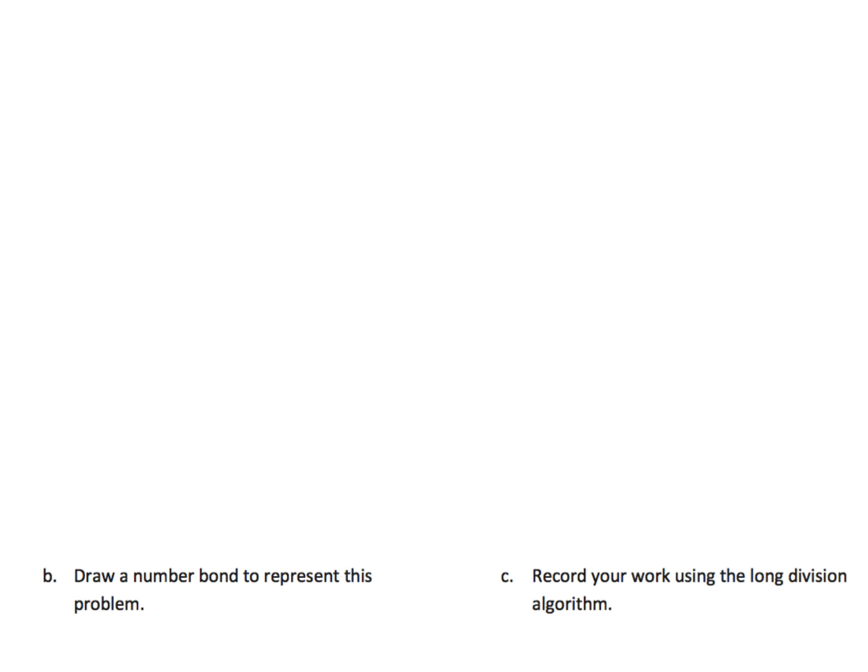And the last problem for this video, we're going to draw the area model for a big problem. It says 2762 divided by 2. So we're going to start with 1,000, because that's going to give us our 2,000. And what do we have left over? Left over, we have 762. But what we can do is we know that if we have 762, we know 300 can go right here.